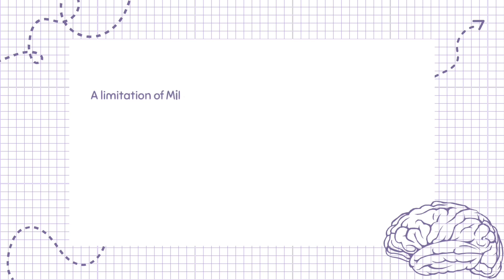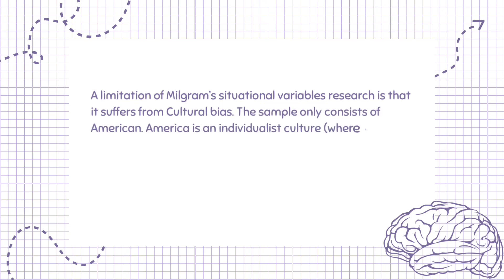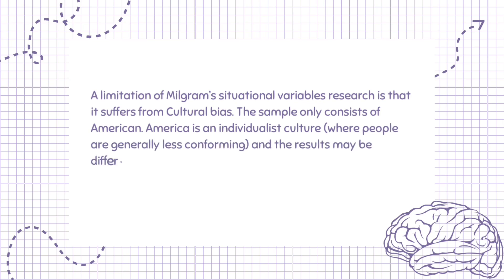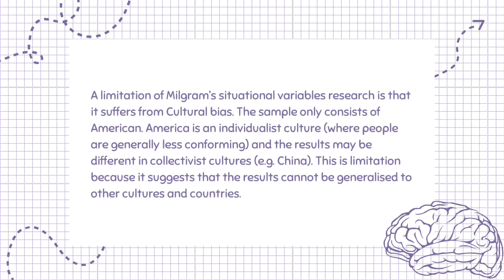A limitation of Milgram's situational variables research is that it suffers from cultural bias. The sample only consists of Americans. America is an individualist culture where people are generally less obedient, and the results may be different in collectivist cultures, e.g. China. This is a limitation because it suggests that the results cannot be generalised to other cultures and countries.